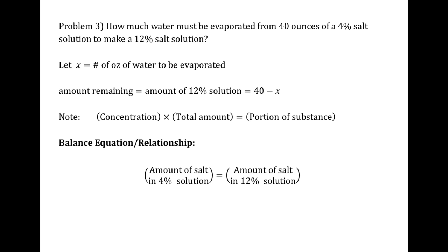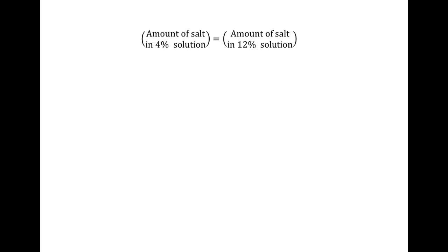We write our balance equation. The amount of salt stays fixed — it's the same in the original 4% solution and the resulting 12% solution. What changes is the total amount of liquid. The amount of salt in the 4% solution is 40 ounces times 0.04. The amount of salt in the 12% solution is 0.12 times (40 minus x). So our equation is 0.04 times 40 equals 0.12 times (40 minus x).